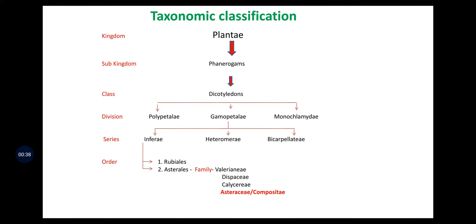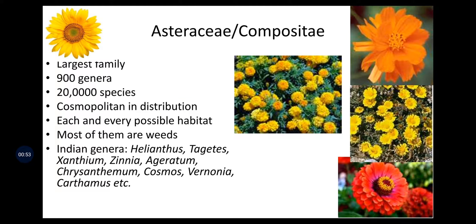Asteraceae family is further divided into Valerianaceae, Dipsacaceae, Calyceraceae, and Asteraceae or Compositae. That means Compositae belongs to order Asteraceae and series Inferae. Asteraceae is the largest family having 900 genera and 2 lakh species, and is cosmopolitan in distribution.